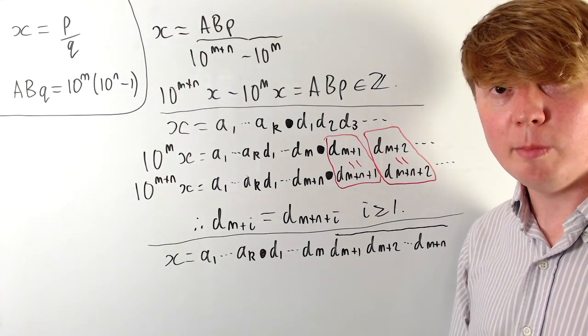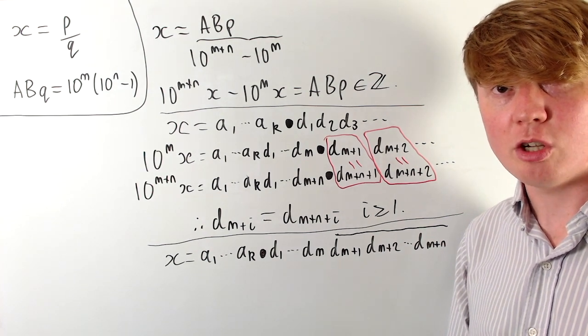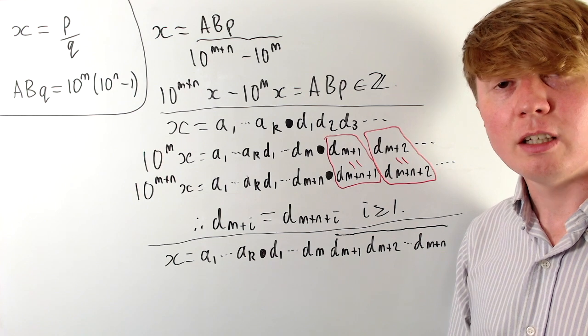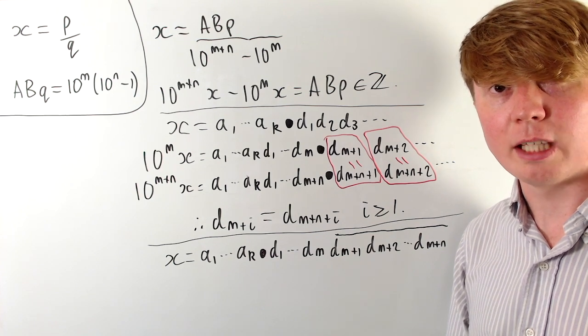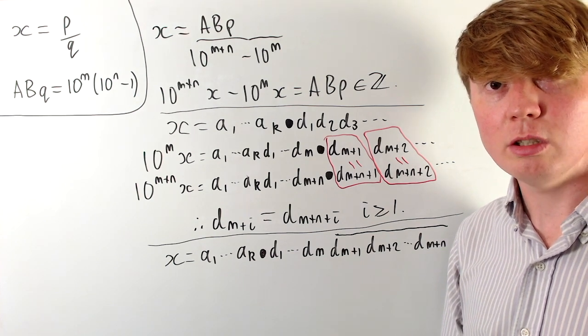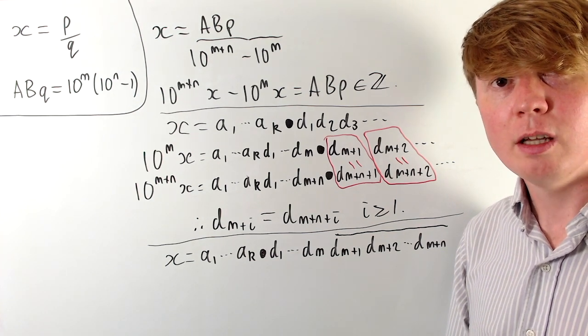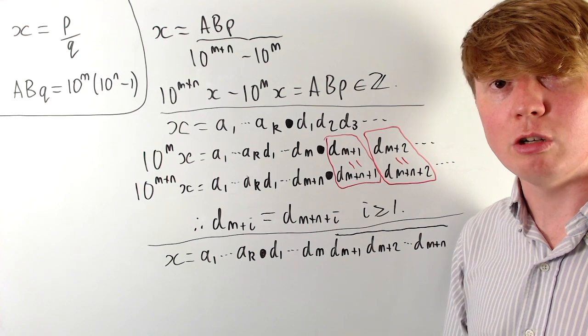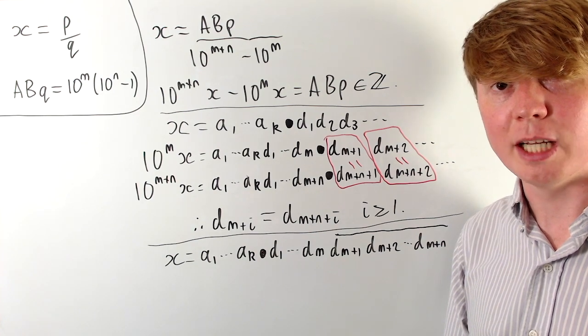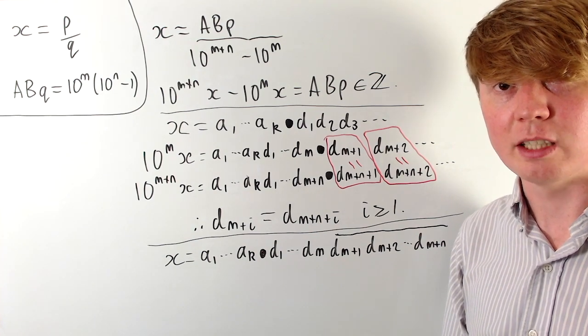Remembering that we had terminating decimals in the earlier separate case, we can conclude that every rational number must have a recurring or a terminating decimal expansion.